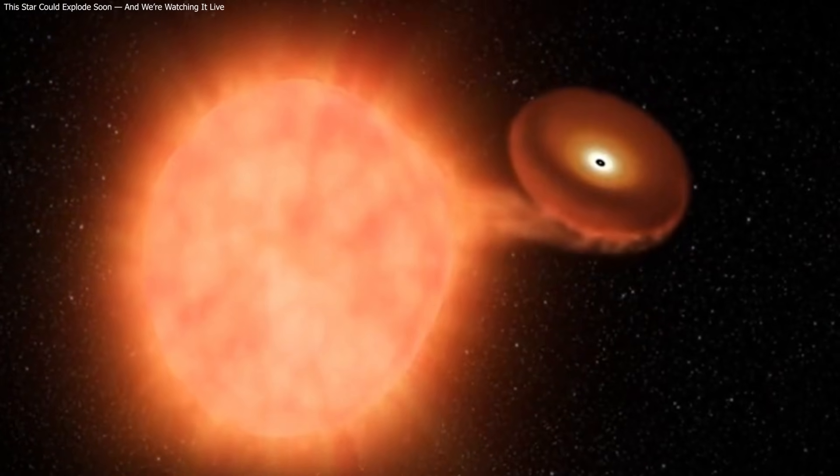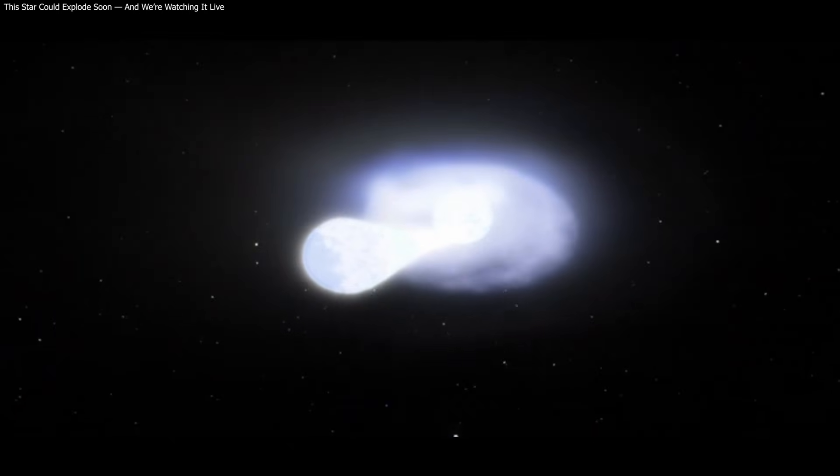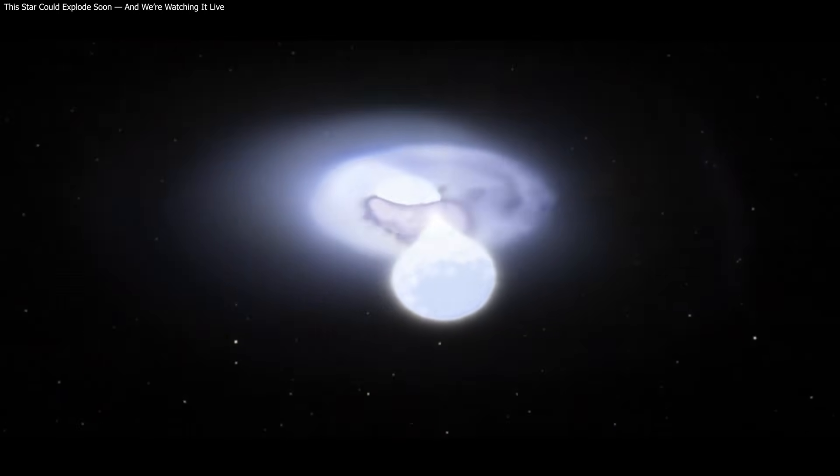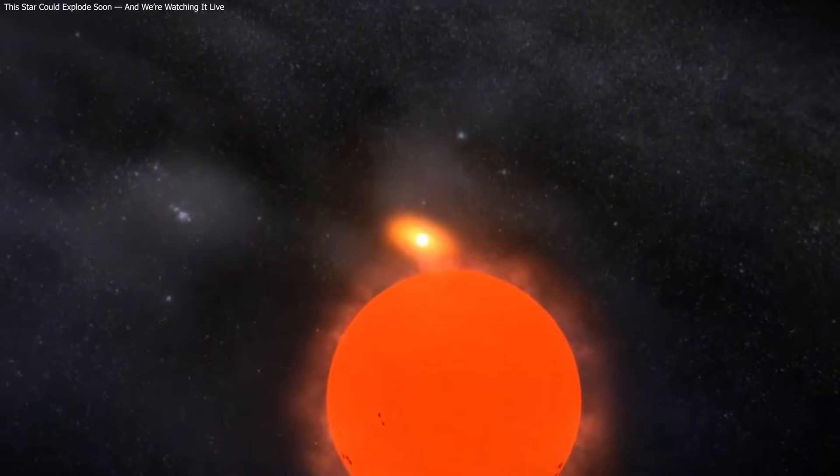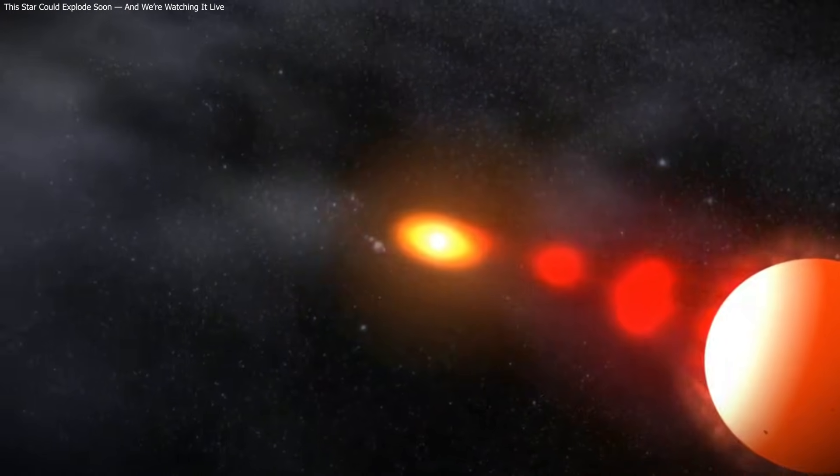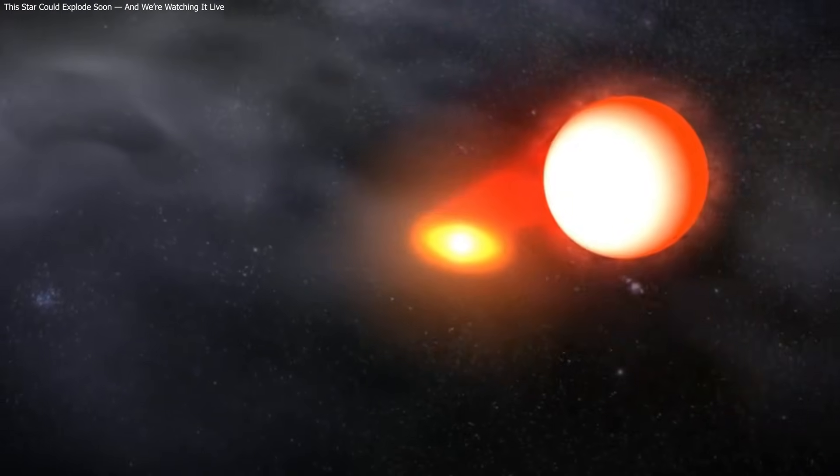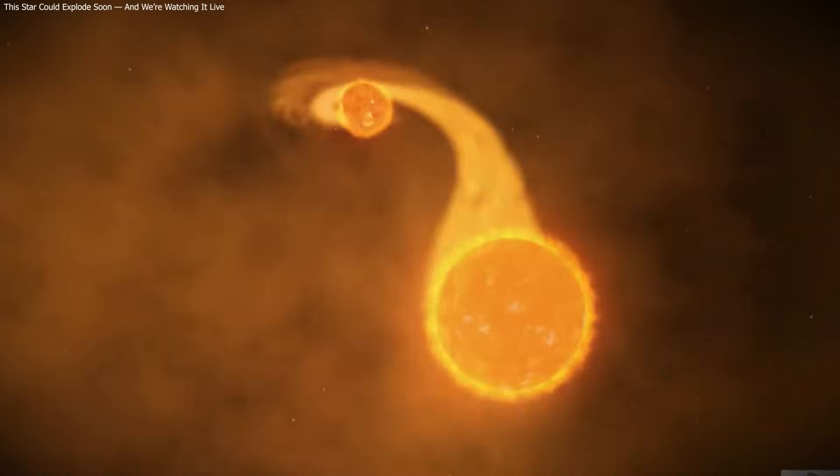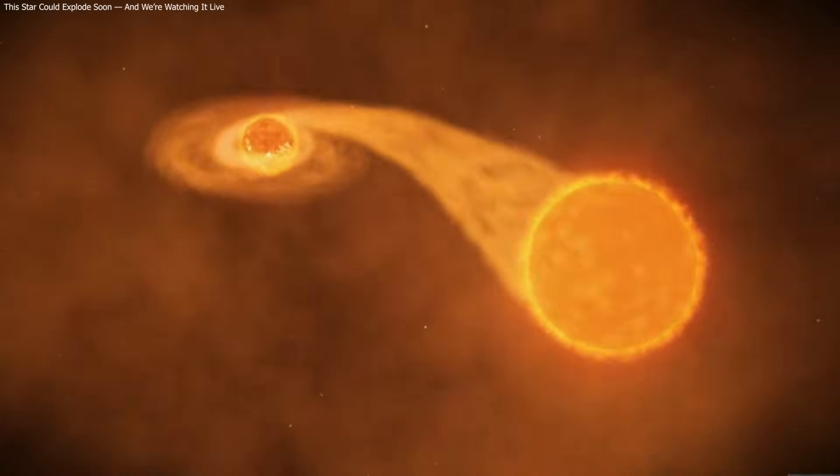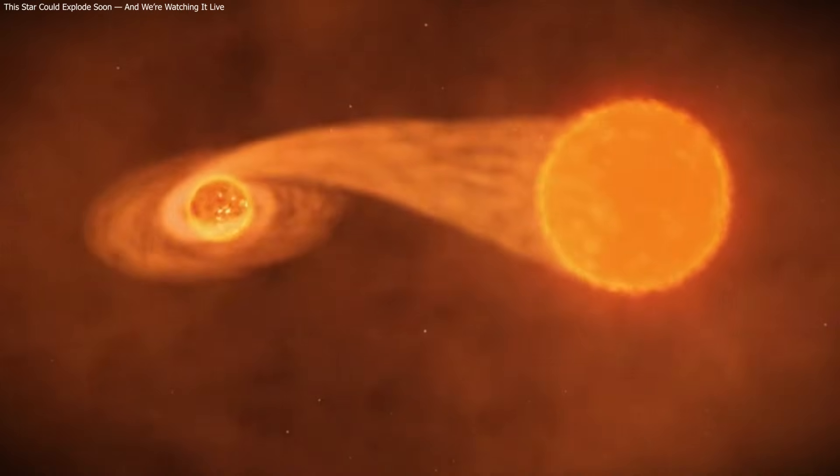V Segatai is entering a critical stage driven by extreme mass transfer and ongoing nuclear burning. Its future evolution could clarify how some of the universe's most powerful stellar explosions begin. For now, astronomers are watching closely, knowing the next change could be sudden.